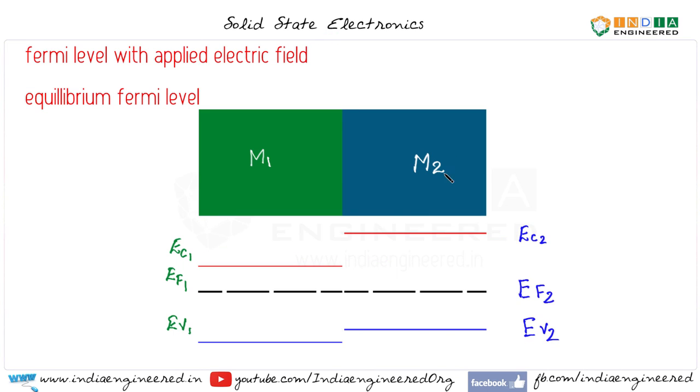So this is how it is going to be. So we have no gradient in the Fermi level, that is dEF by dx, the space gradient. So we are considering from material 1 to material 2 we have dEF by dx equal to 0, that is at equilibrium.